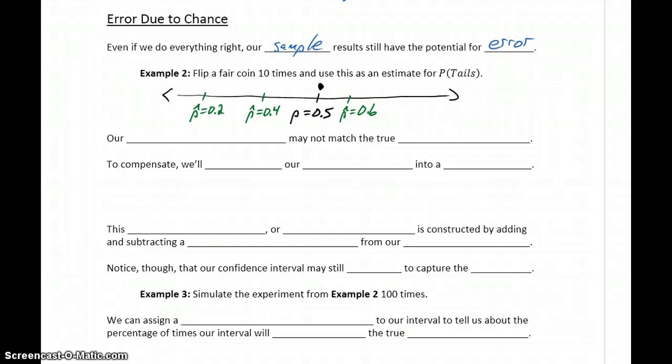So whenever we conduct a study, whenever we conduct a sample, then we're going to end up with values that sometimes get that population parameter exactly right, other times are very close, and sometimes are farther away.